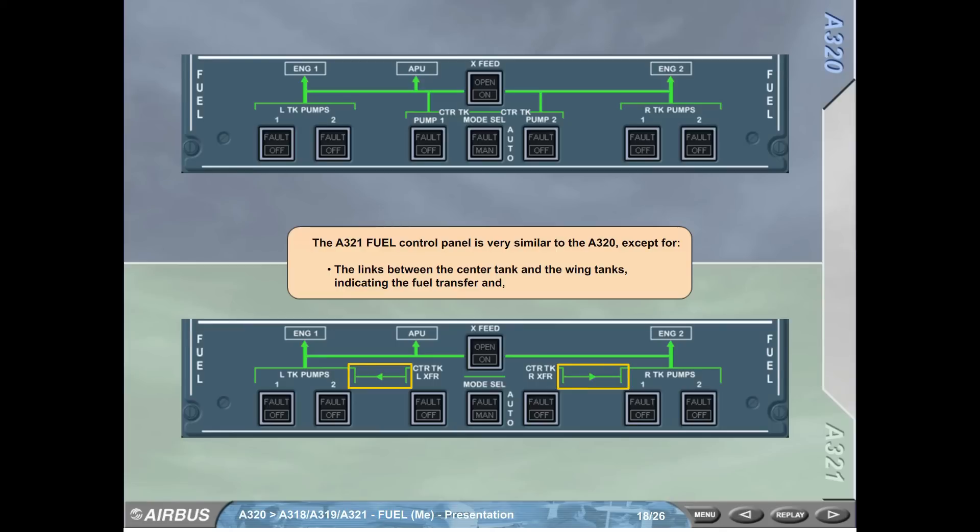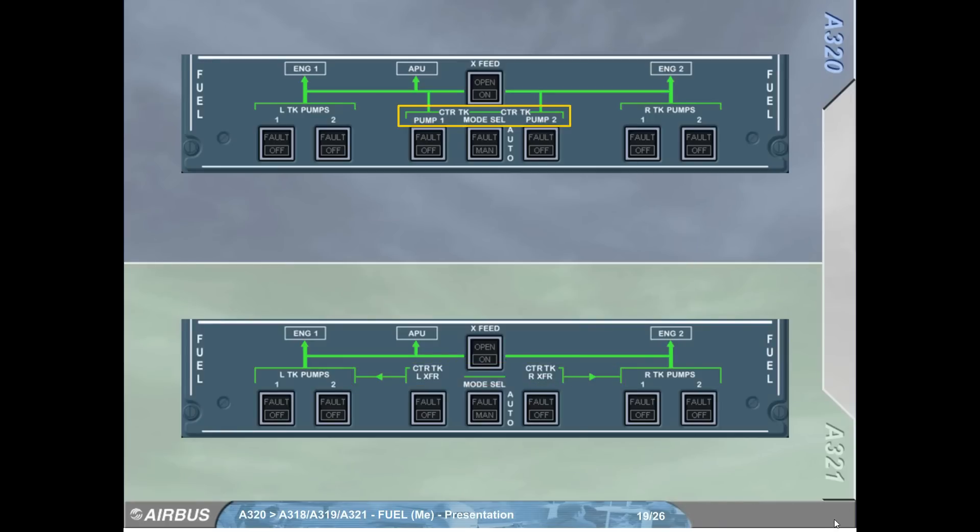The A321 fuel control panel is very similar to the A320 except for the links between the center tank and the wing tanks indicating the fuel transfer and the labels center tank transfer instead of center tank pumps.